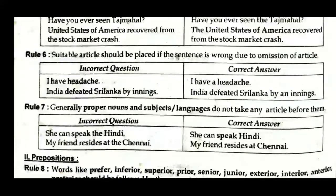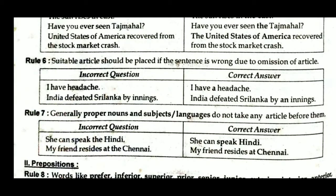Sometimes omission of articles is tested — you have to supply the missing article. For example, 'India defeated Sri Lanka by innings' is incorrect; correct is 'India defeated Sri Lanka by an innings.' Rule 7: Proper nouns, subjects, and languages do not take any article. So 'She can speak the Hindi' is incorrect — correct is 'She can speak Hindi.' Similarly, 'My friend resides at the Chennai' is wrong — correct is 'My friend resides at Chennai.'